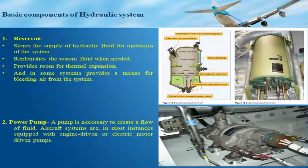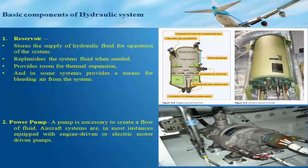The second component is the power pump. This pump is required to create a flow of fluid. Generally aircraft systems are equipped with engine-driven or electric motor-driven pumps. There are various pump types: gear type, gerotor type, vane type, and piston type pumps. The pump type is chosen depending on the complexity of the system and the aircraft type.